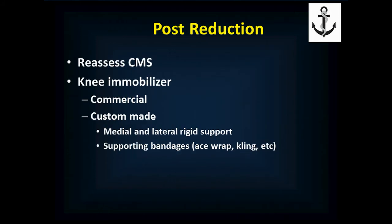After reducing a patellar dislocation, do your circulation, motor, and sensory evaluation. The kneecap shouldn't be injuring blood vessels or nerves, so if you find distal neurovascular problems, the dislocated kneecap was not the only problem. Then put them in a knee immobilizer — a commercial one if available, or a custom-made one with medial and lateral rigid supports on either side of the knee with a supporting bandage such as an ace wrap or cling gauze, as covered in the splinting handouts.